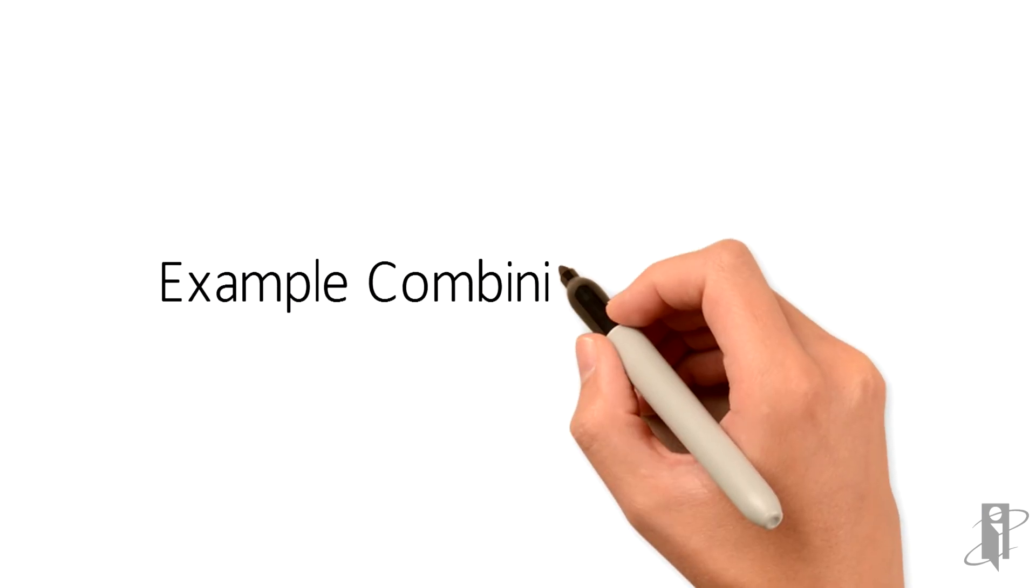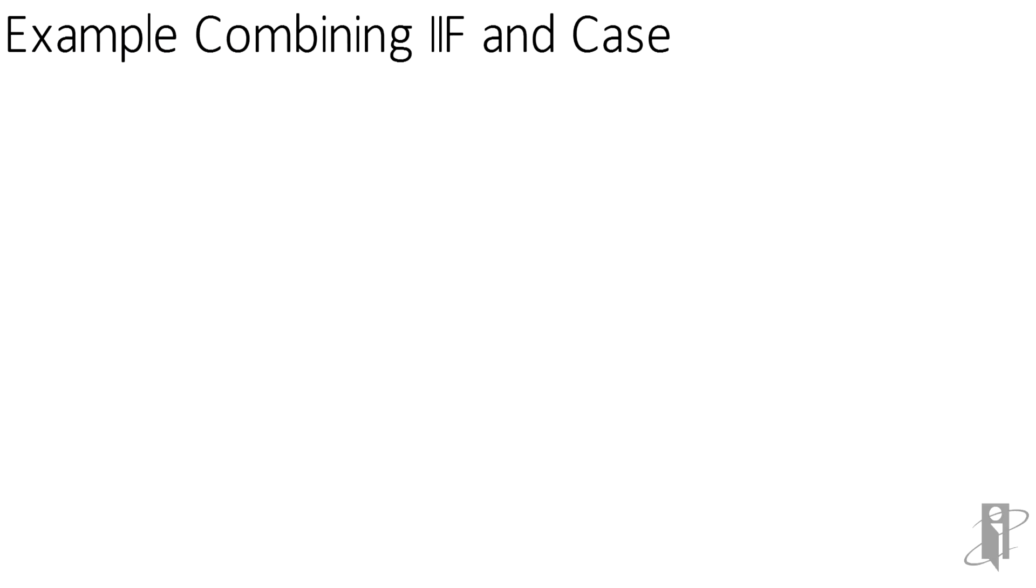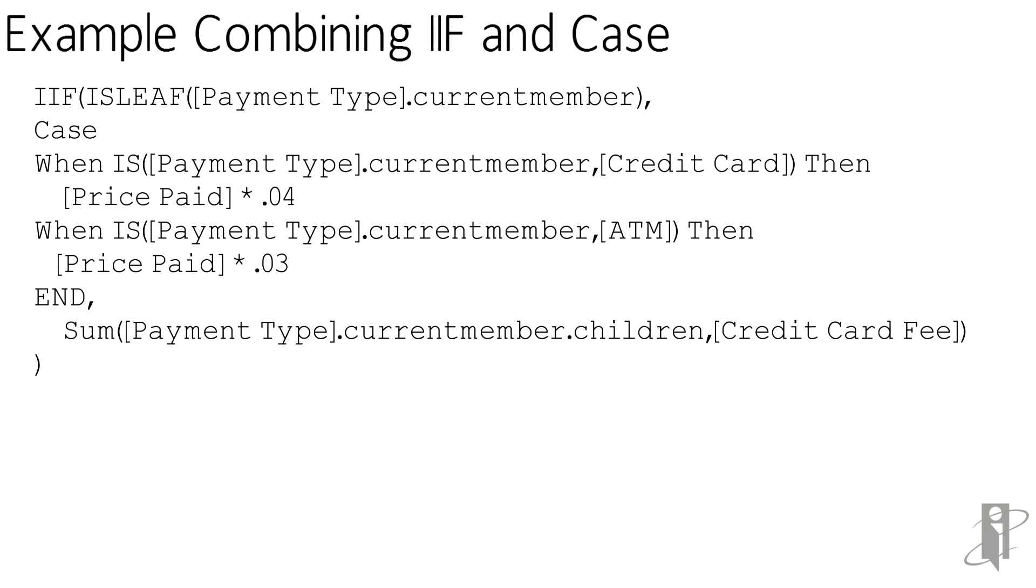Now how about combining them all together? If we look at this statement the first line in red, the if statement: if is leaf of payment type current member, so if we are at the level zero members, then I've got a case statement in here to do that same kind of logic. I changed the rates on here, they keep going up on me, but this way we can see that the numbers are different.